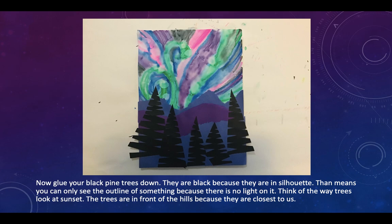Now glue your black pine trees down. They are black because they are in silhouette — that means you can only see the outline of something because there is no light on it. Think of the way trees look at sunset. The trees are in front of the hills because they are closest to us.